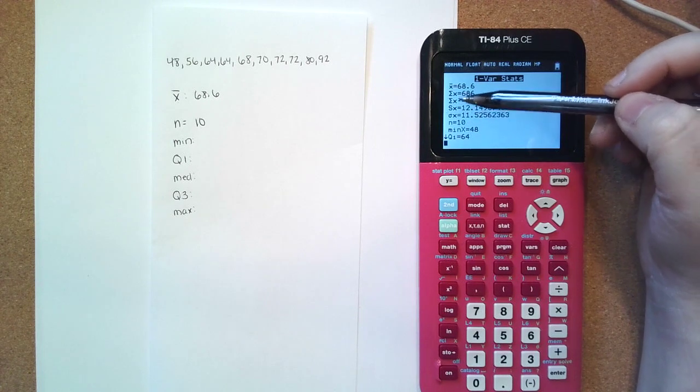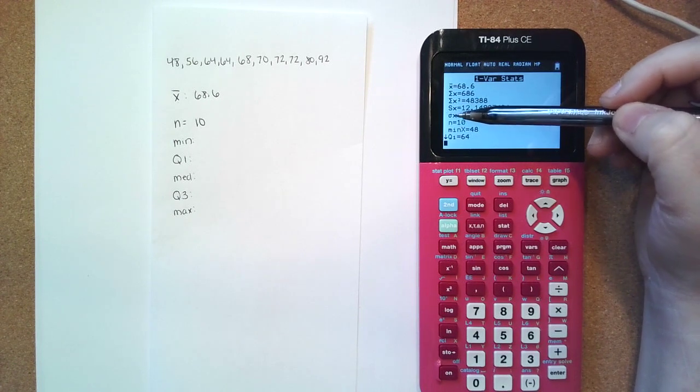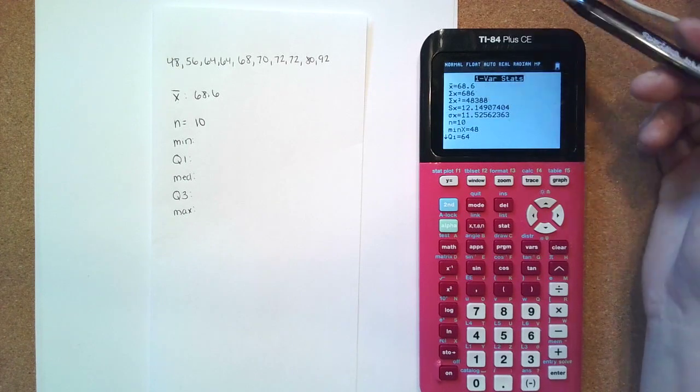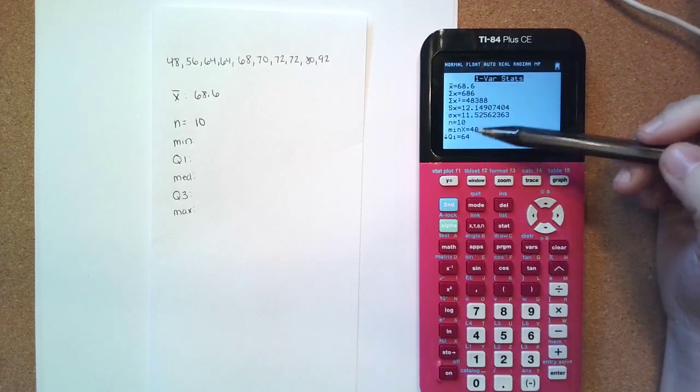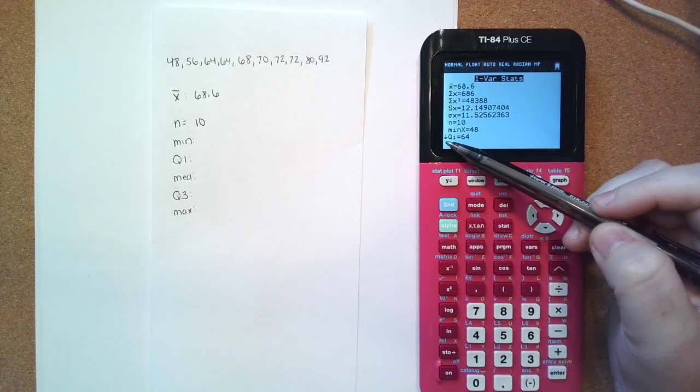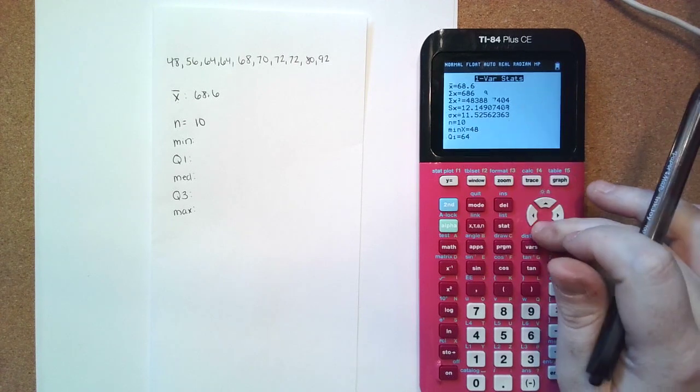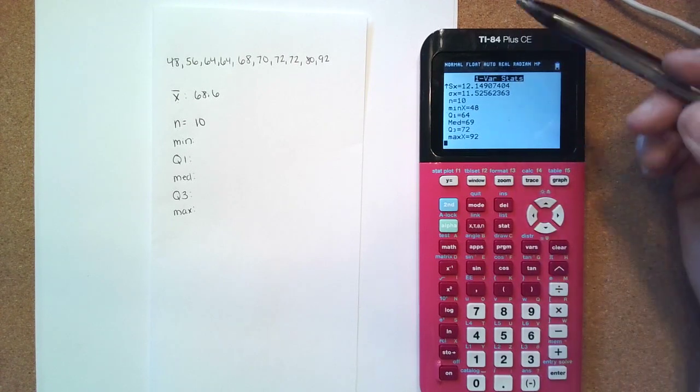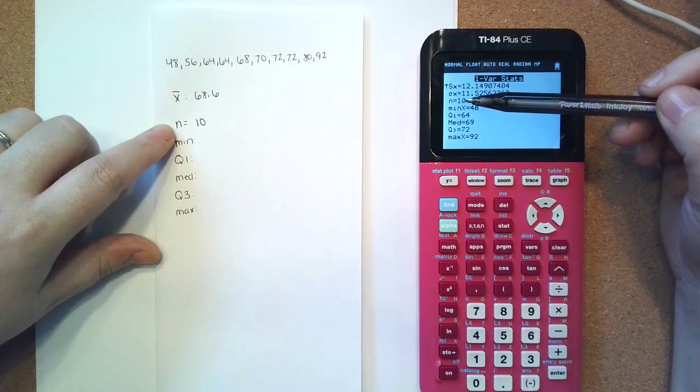If you scroll on down, we have other things in here. These are your standard deviations for sample and population. I'm not going to get into that right now. Down below, you see there's a little arrow here saying there's more to it. You have your five number summary down here.